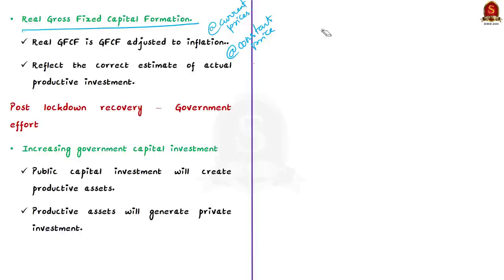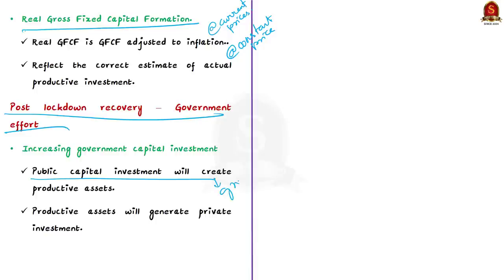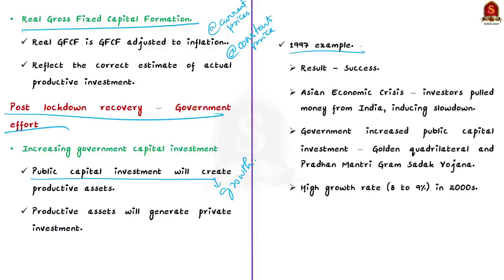Post-COVID pandemic and its associated economic slump, our government focused on investment-led economic growth, specifically on public investment in the hope that it would pull in private investment, and ultimately bring growth to the economy. This is a solid plan, and it is not the first time the government has focused on increasing public investment to improve economic growth. In the late 1990s, the government used the same strategy and succeeded.